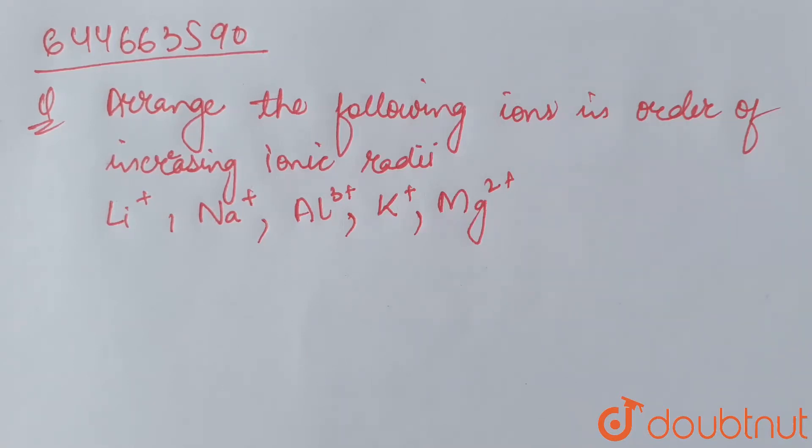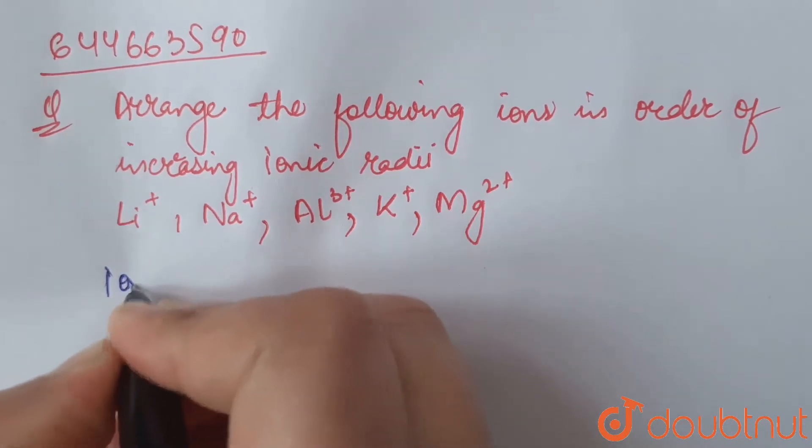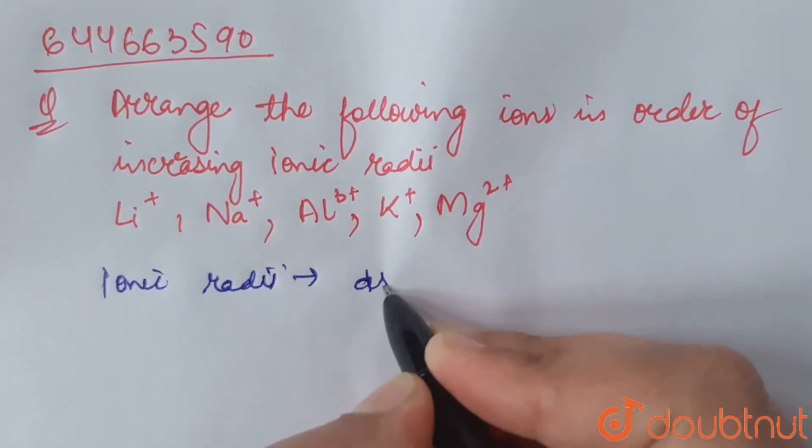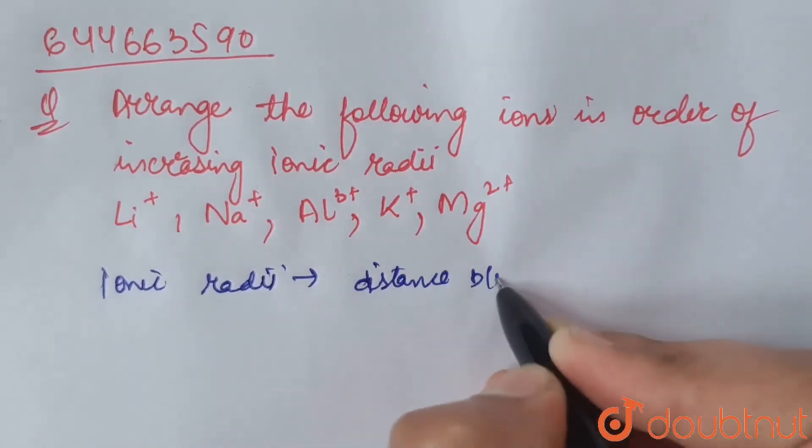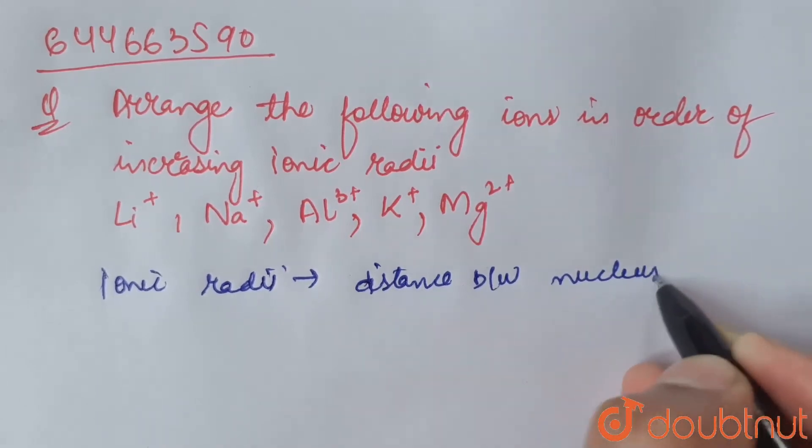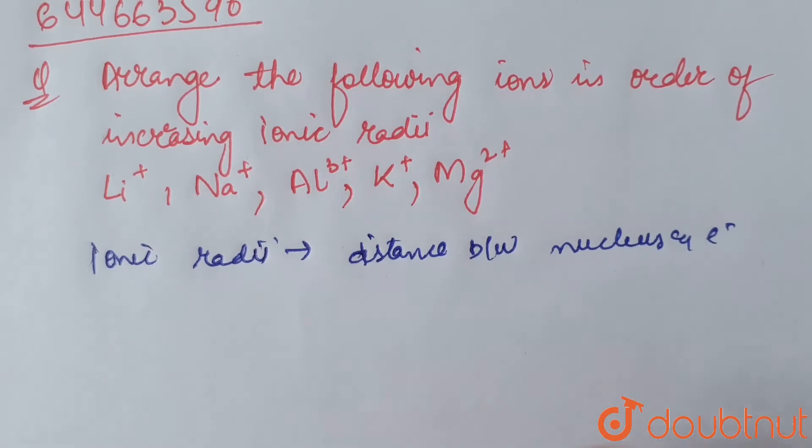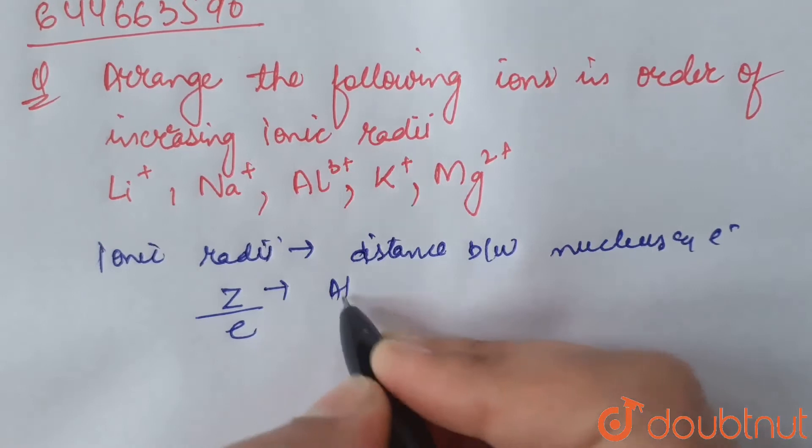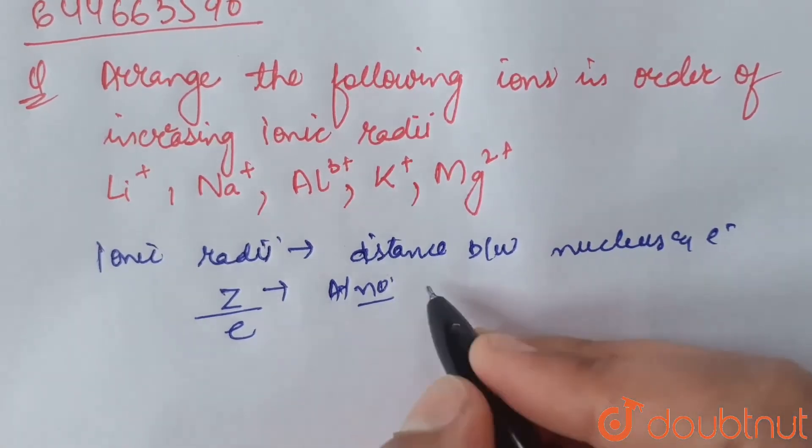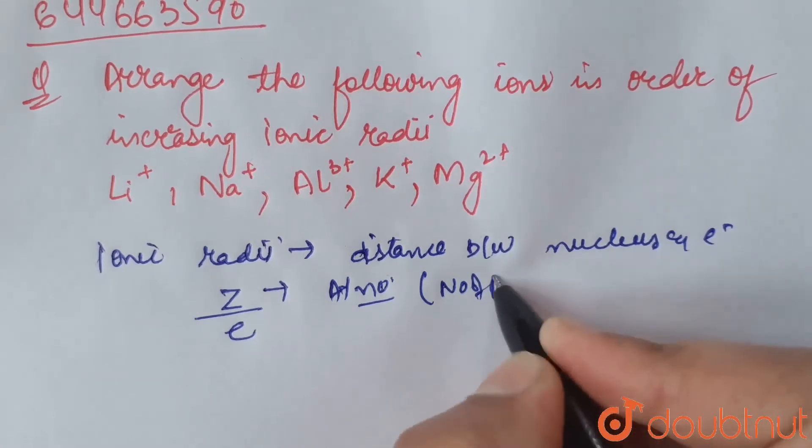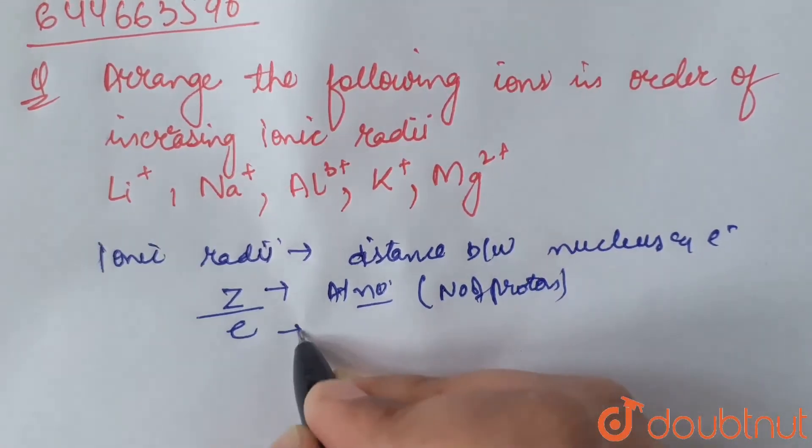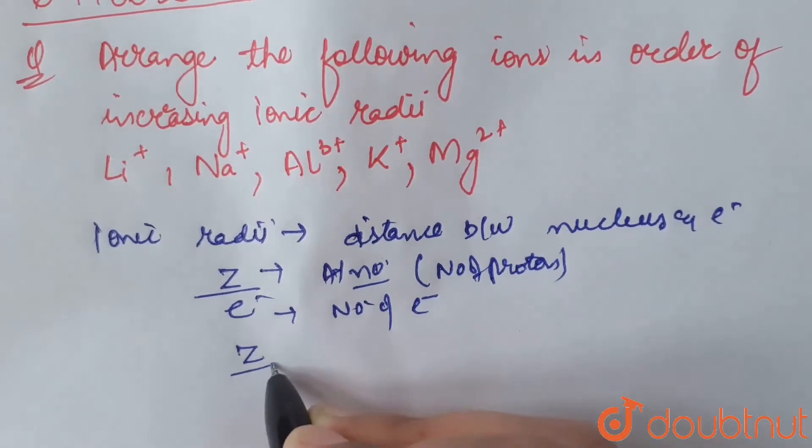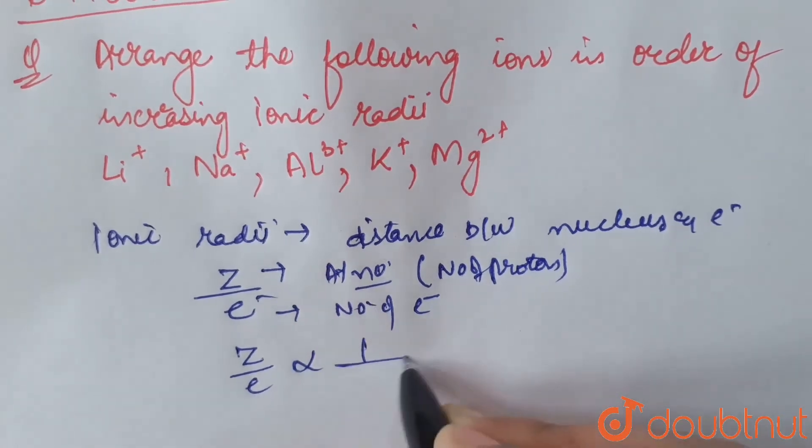Ionic radii - it is the distance between nucleus and electrons. Ionic radii is given by ratio of Z by e, where Z is the atomic number and e is the number of electrons. Atomic number equals number of protons, and e is number of electrons. Z by e ratio is inversely proportional to the ionic radii.